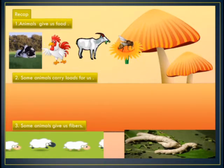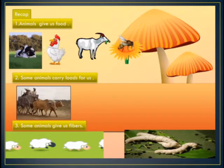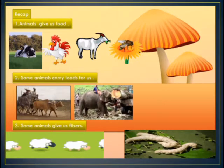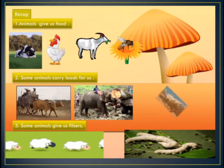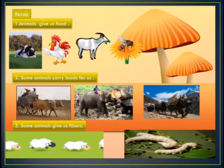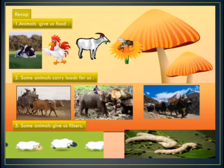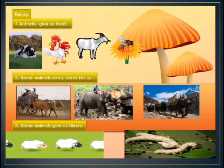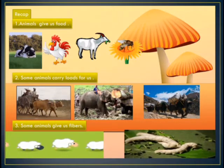Some animals carry load for us — they are known as beasts of burden. Examples of beasts of burden include bullocks, elephants, and yak, which carry load for us. Some animals also give us fibers, like sheep and silkworm. Sheep gives wool and we make woolen garments from wool. Silkworms give us silk fiber and we make silk cloths from it.